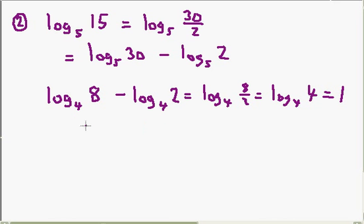Now, if you wanted to see this in another way, you could also get to 1 by working out the values of these two logarithms. So log of 4, 8. 4 to the power of something is equal to 8. Well, that is 3 halves. And 4 to the power of 1 half is 2. So 3 halves take away 1 half is 1.